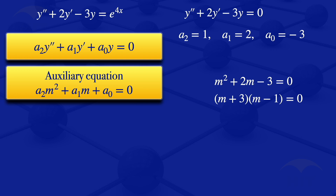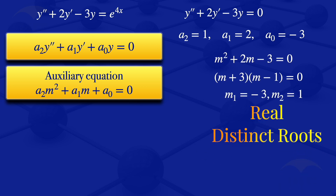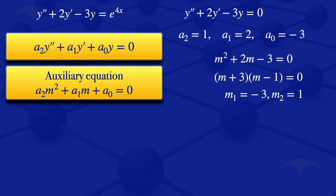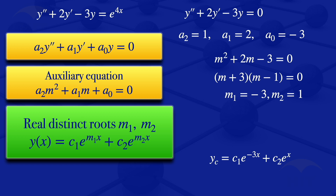Solving for m, we get m1 = -3 and m2 = 1. These are real distinct roots. When the auxiliary equation has real distinct roots, the general solution of the homogeneous ODE is c1·e^(m1·x) + c2·e^(m2·x).